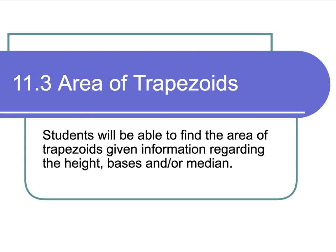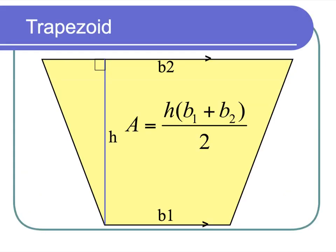Area of trapezoids coming at you — this is going to be cray. So here's our formula for the area of a trapezoid. If you remember, trapezoids have two bases, so we have to account for both of them. This part of the formula we're averaging the bases: base 1 plus base 2 divided by 2, then multiply by our height. Height has to be perpendicular to both bases.